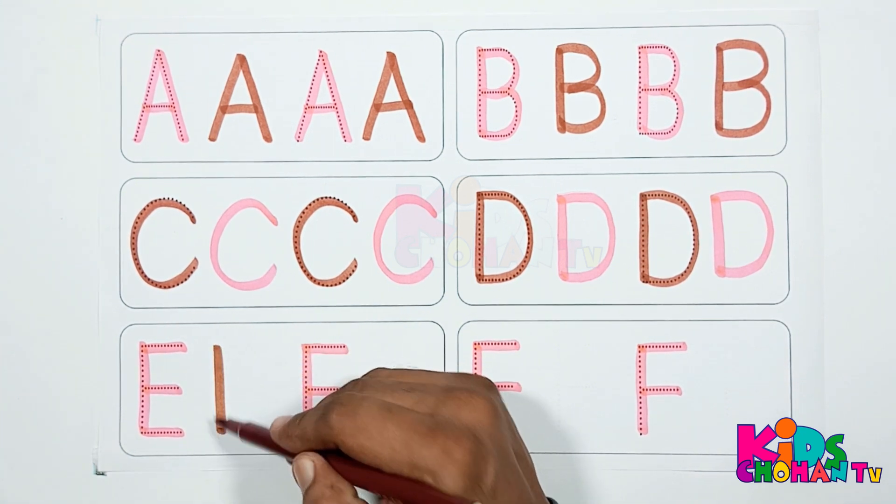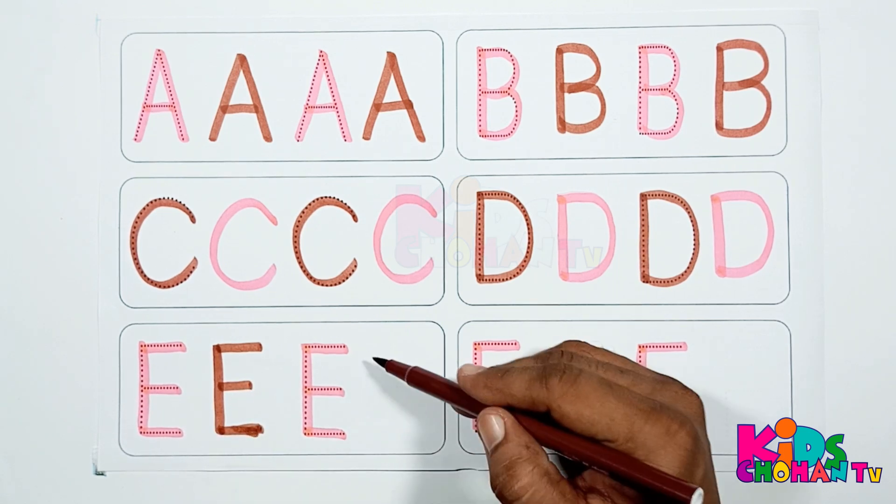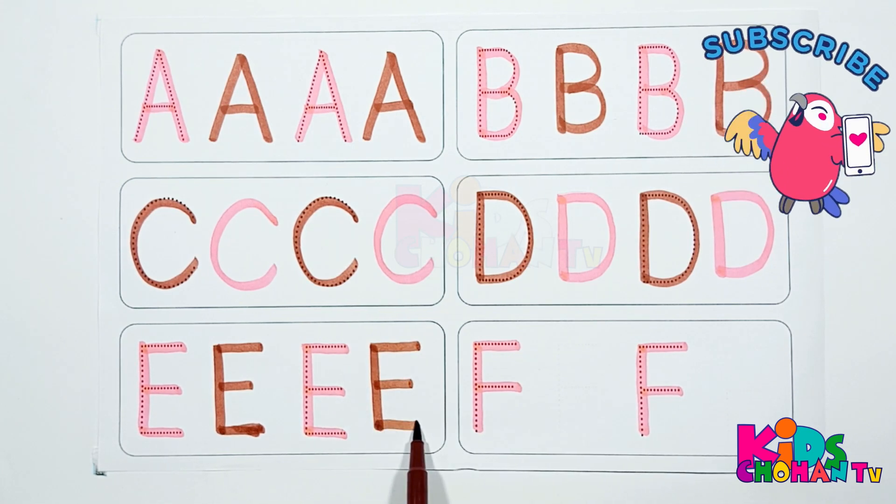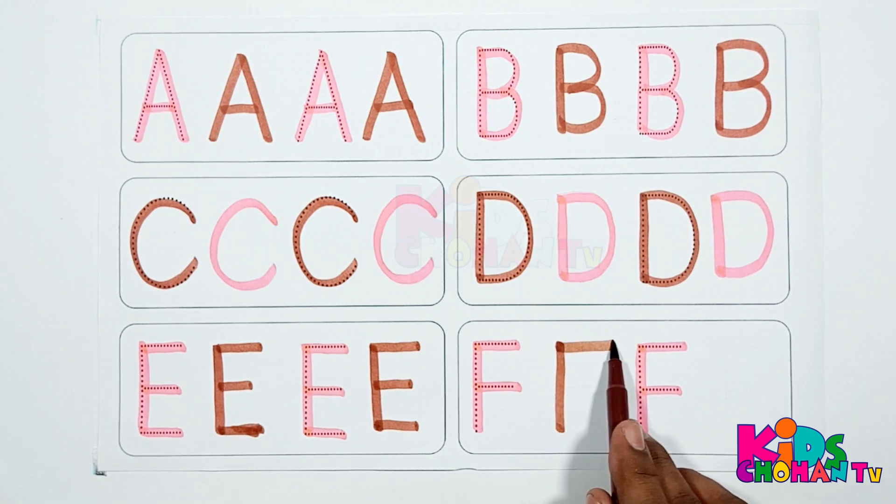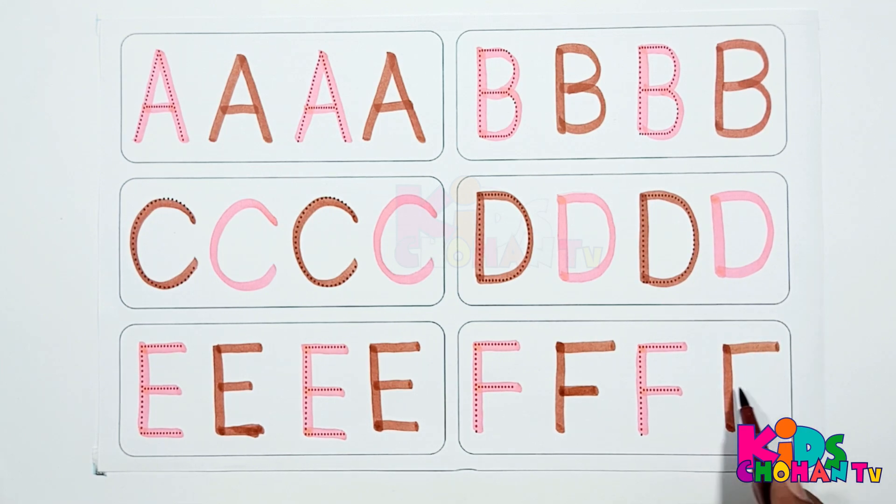Here we are dressing letter E. E is for eagle. We are dressing letter F. F is for fox.